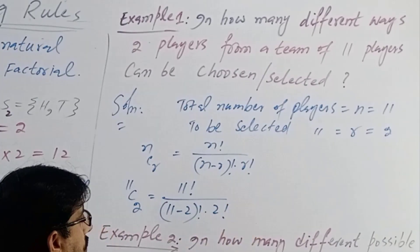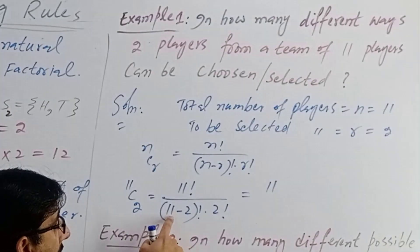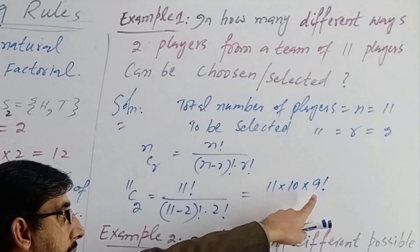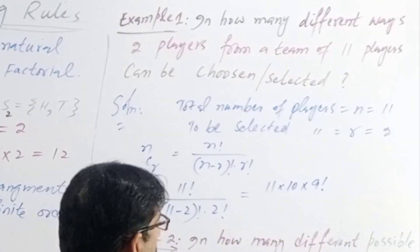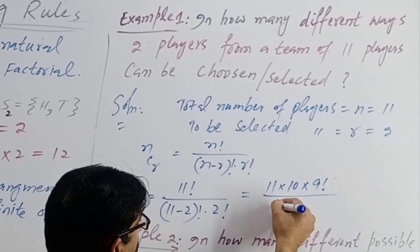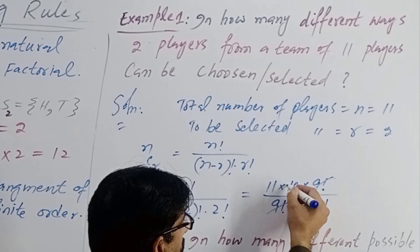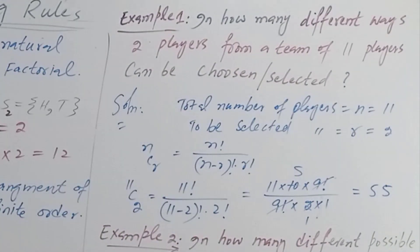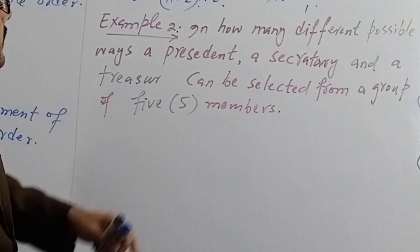11 minus 2 gives 9 factorial in the denominator. We open 11 factorial down to 9 factorial: 11 multiply 10 multiply 9 factorial, divided by 9 factorial into 2 factorial. The 9 factorials cancel. We get 11 multiply 10 divided by 2 multiply 1, which equals 110 divided by 2, giving us 55. So we can select 2 players in 55 ways.